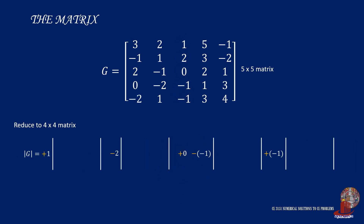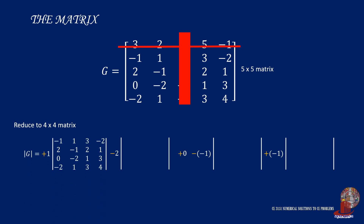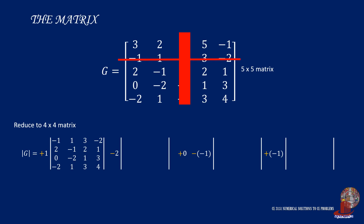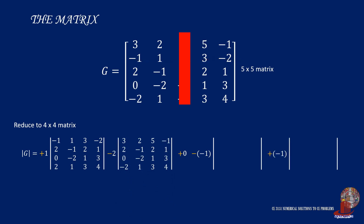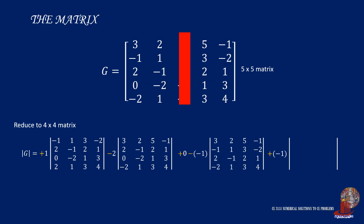The reduced 4 by 4 matrix starts by providing the minors, and that is by covering the column and the first row. The minors make up the determinant in the first term. Now covering the second row also completes the elements to be used for the second term. Then covering the fourth row also completes the elements for the determinant in the fourth term. The fifth term has a determinant with elements found after covering the fifth row.